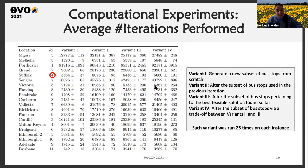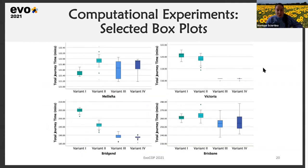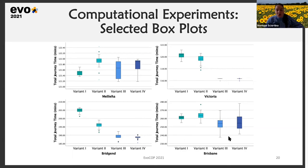These are some selected box plots for four instances, plotting the total journey times achieved via the four variants across 25 runs each. The performance of the different variants is highly dependent on the input data, but variants three and four perform best across all four instances, which was also evident in the remaining 16 instances.